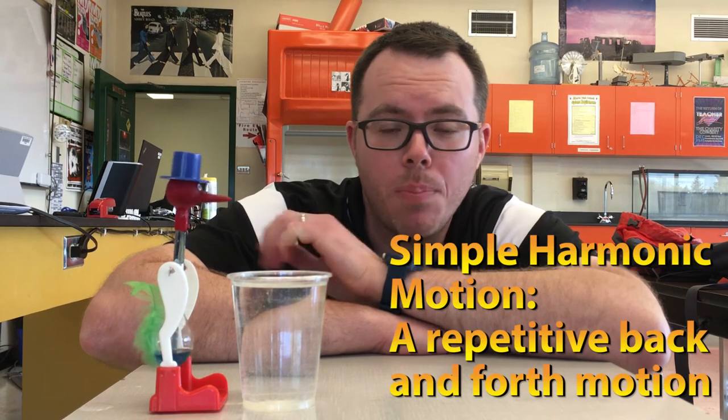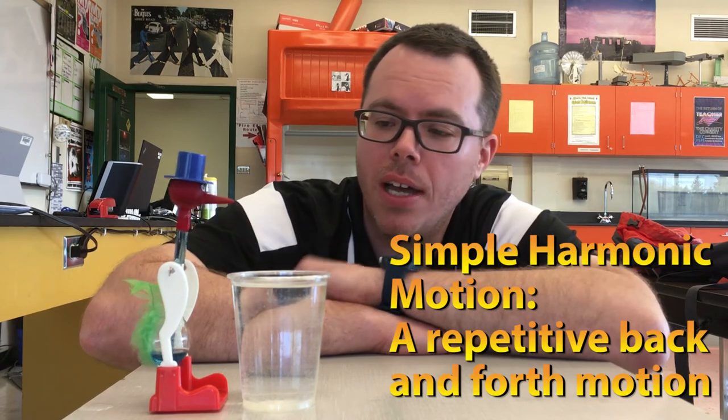This bird is an example of something that undergoes simple harmonic motion. It's a repeatable back and forth motion driven by a force. There's lots of different examples, but the one we're going to take a look at in this video is a mass on a spring.